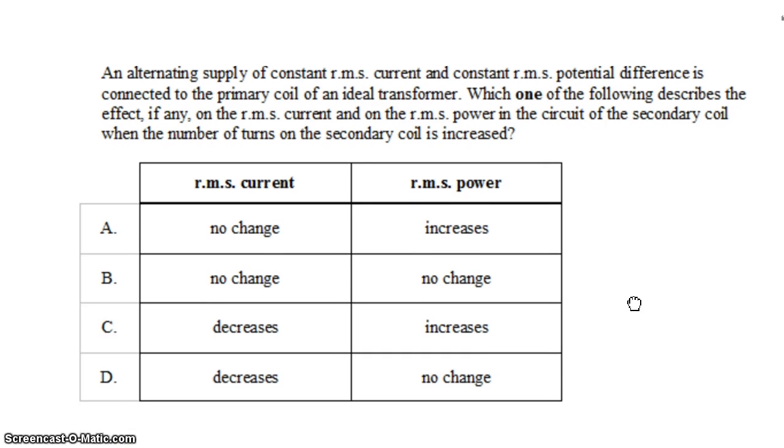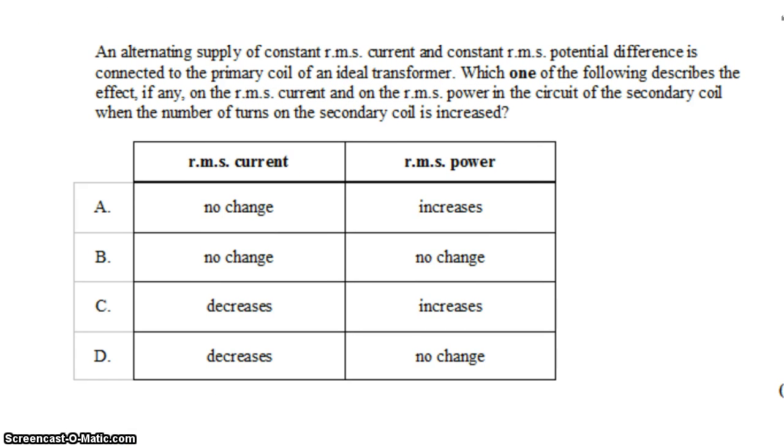We have an alternating supply of constant RMS current and constant RMS potential difference, or voltage, and it's connected to the primary coil of an ideal transformer. Which one of the following correctly describes the effect, if any, on the RMS current and the RMS power in the circuit of the secondary coil when the number of turns in the secondary coil is increased?